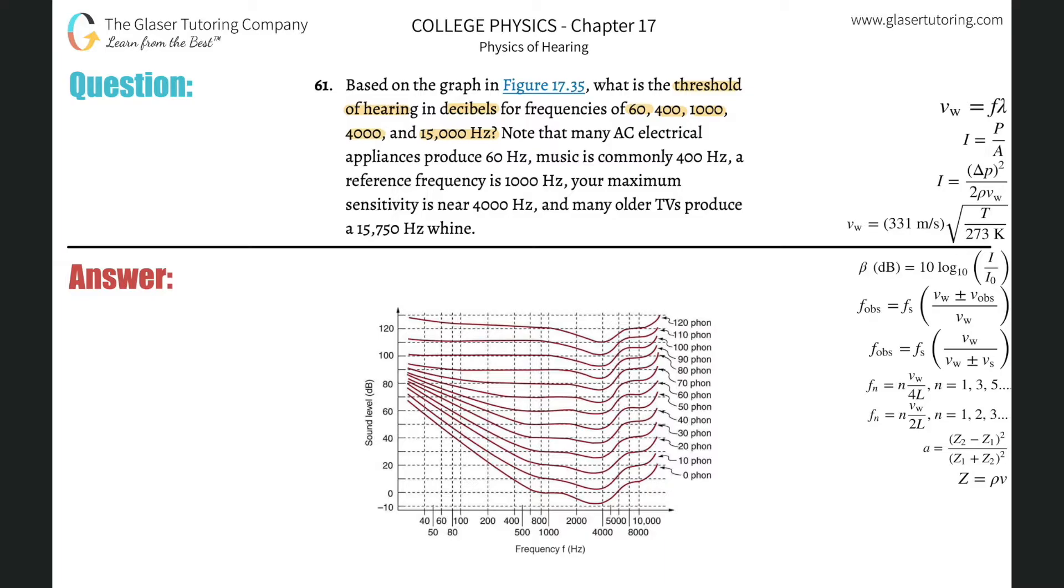60 Hz is this vertical line right here. Do it for 400, here's 400. Do it for 1000, here's 1000. Do it for 4000. And then do it for 15,000, which is off the graph somewhere, I don't know where it is, somewhere over there.